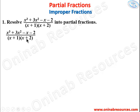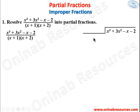To resolve this into partial fractions we expand the denominator and use it to divide the numerator by long algebraic division. The numerator, x³ + 3x² − x − 2, goes inside, while the denominator when expanded gives x² + 3x + 2 and is placed outside. We concentrate on the first term of each.